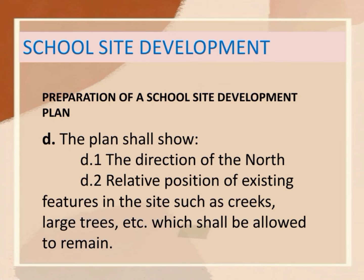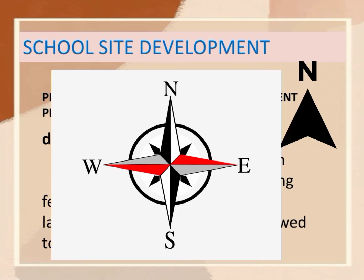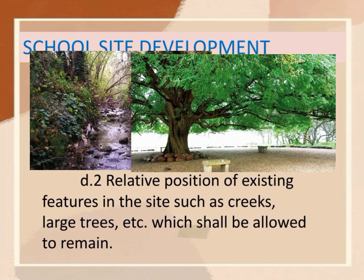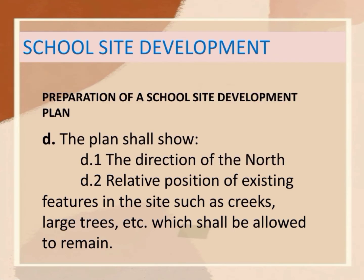The plan shall show the direction of the north. The top side of a map is often the north direction. The relative position of existing features in the sites such as creeks, large trees, and others which shall be allowed to remain.